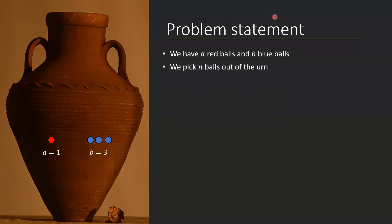Then we take an action. We have this urn and we randomly pick n balls out of the urn. The person picking does so with uniform probability, which means that in our example there will be a 25% chance of picking any one out of these four balls. Then we ask ourselves the fundamental question: we look into our hand and see a certain number of red balls — what is the probability that exactly k balls are red?